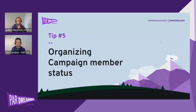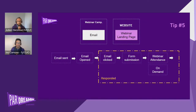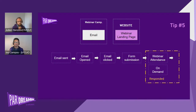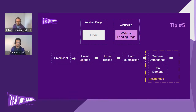It depends because in several teams it can mean different things. For example, for the webinar use case: for some teams, responded status starts from the moment the user clicks the email; for others, it's only when the user submits a form and registers; and for others who are more strict, it's only when the user actually attends the webinar or watches the recording. There's no good or bad answer — it depends on how your company and team decide campaign influence should be taken into account.